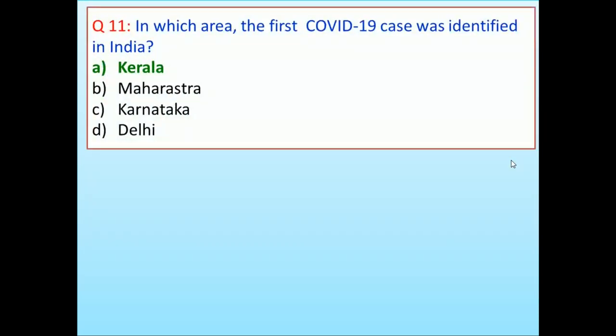In which area was the first COVID-19 case identified in India? Kerala, Maharashtra, Karnataka, Delhi. Answer is Kerala.